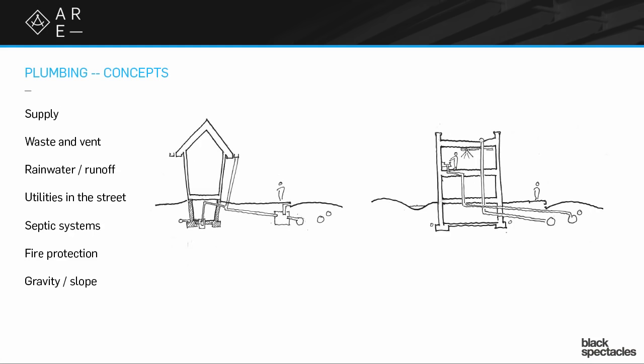You also may get questions about the utilities in the street. So what's the relationship between the sewer pipe in the street and the water main in the street? In case you are asked that question, the sewer pipe in the street is always lower than the water main.